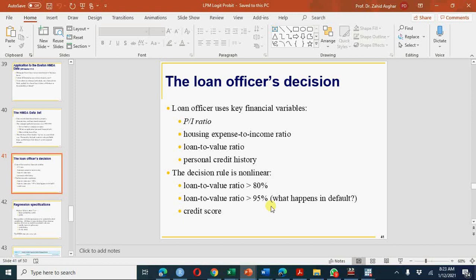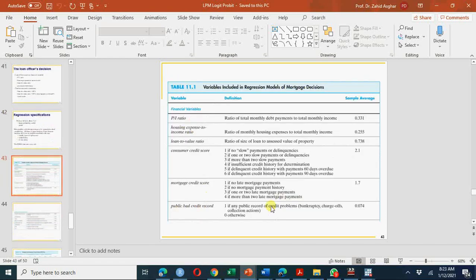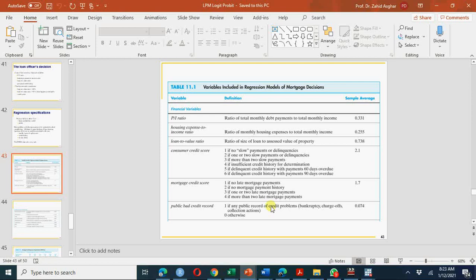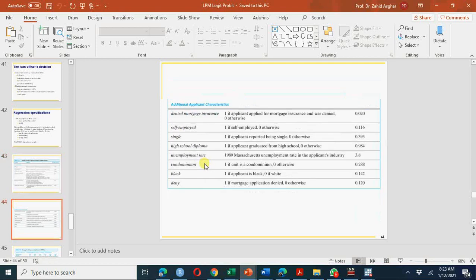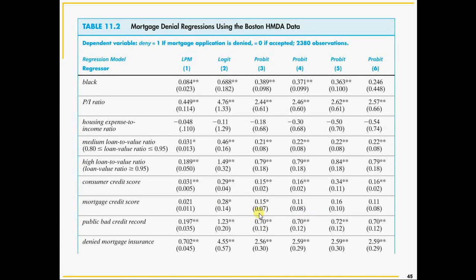Additional variables include personal credit history, the loan-to-value ratio categorized as greater than 80%, greater than 95%, and less than 80%. There are also financial variables such as mortgage credit score, public bad credit score, and consumer credit score, plus other variables like self-employed, single, high school diploma, and unemployment.